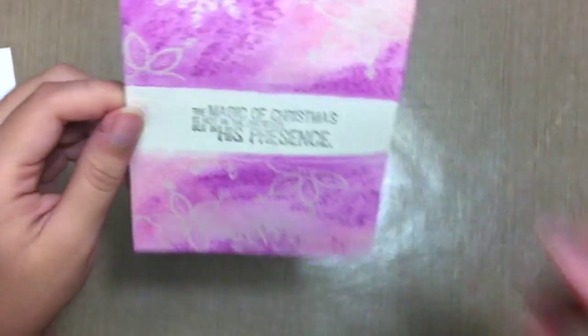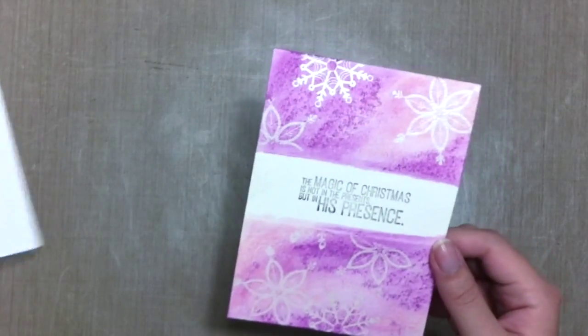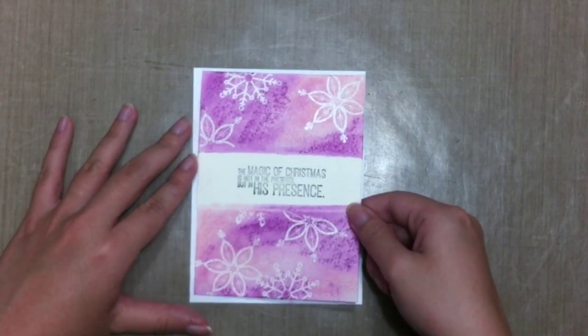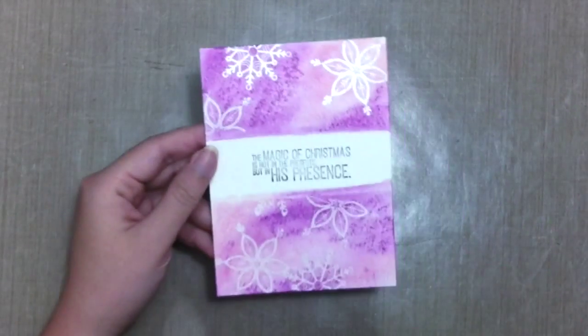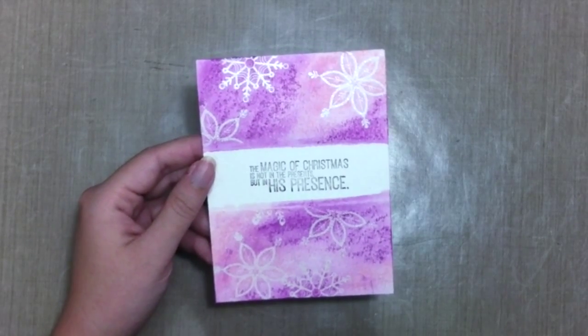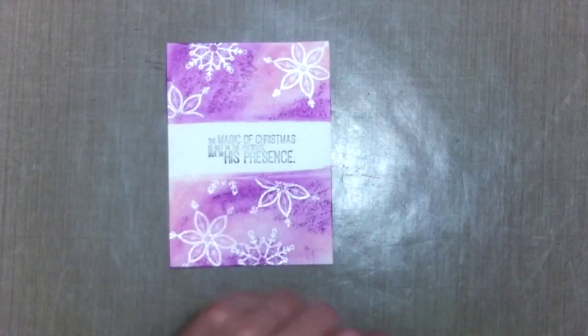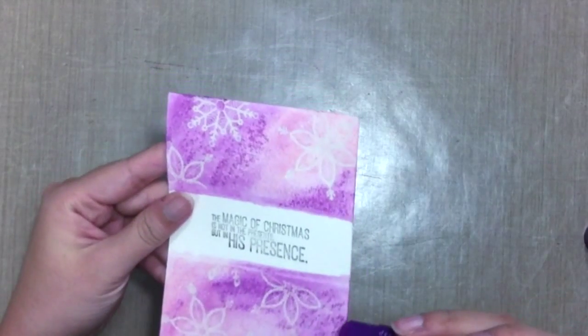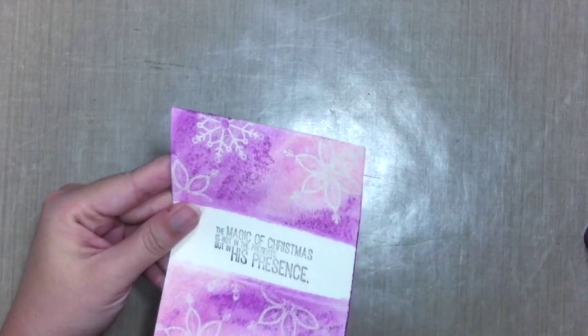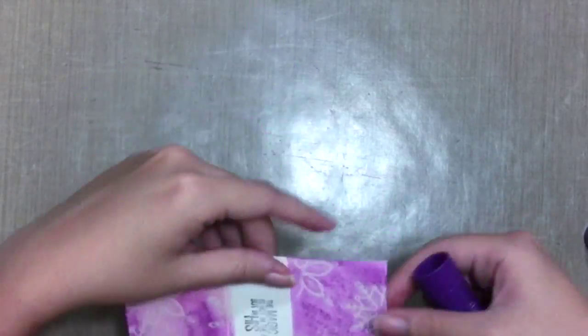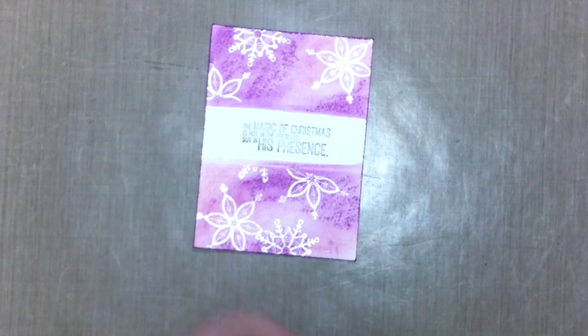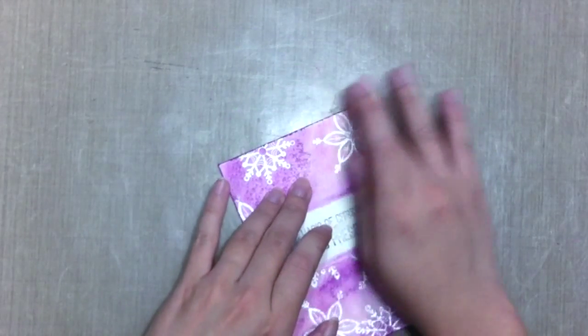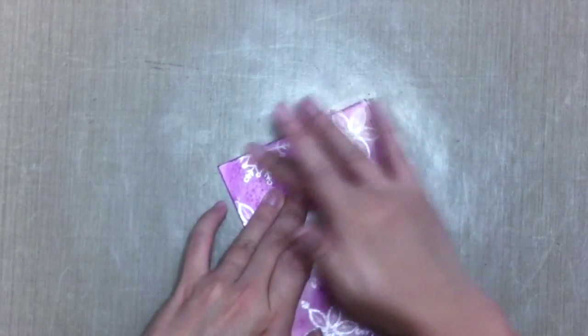And before I mount this, I'm just gonna do like a border around the card, and you could just swipe it across the card like that. So if you want, you could use your fingers again just to slightly blend it in.